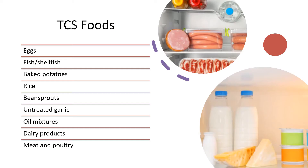Some examples of TCS food include eggs, fish, shellfish, baked potatoes, rice, bean sprouts, untreated garlic and oil mixtures, dairy products, and meat and poultry.